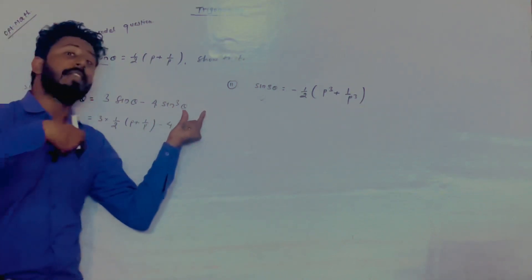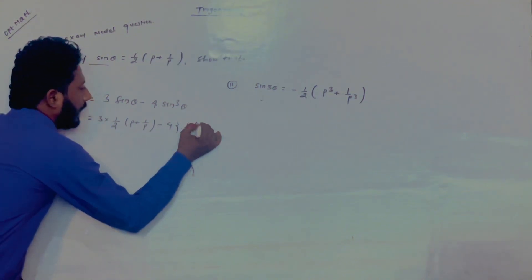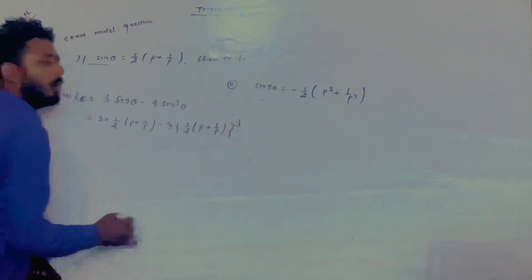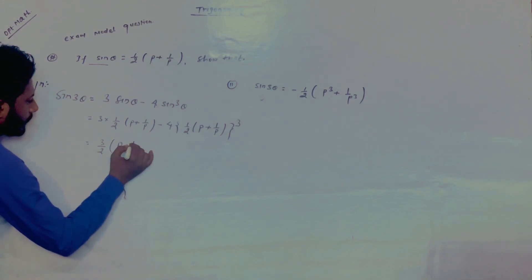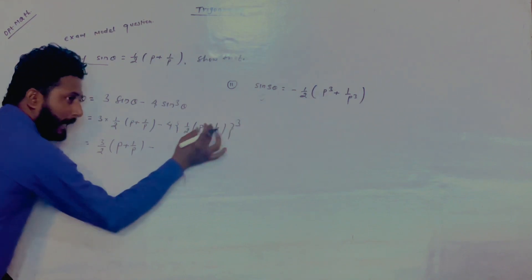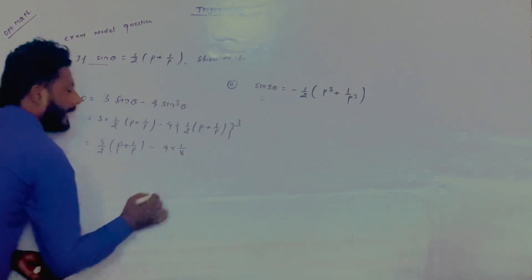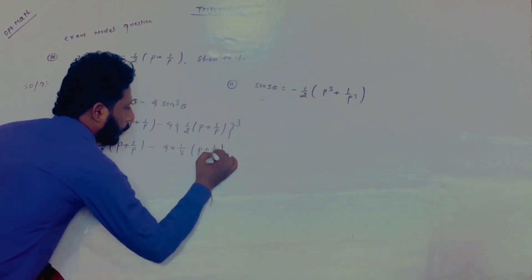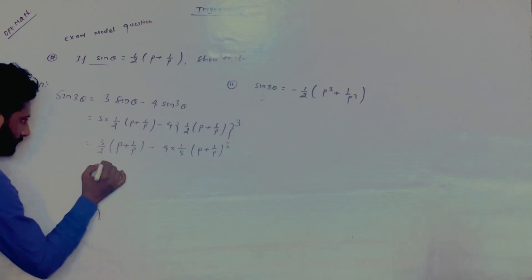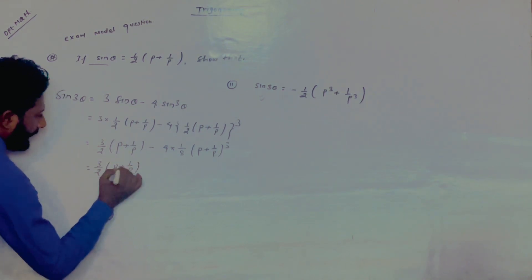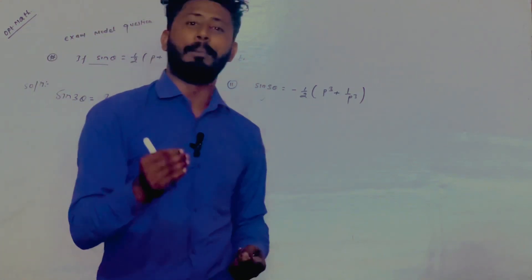Minus 4. There is sine cubed — sine cubed means sine times sine times sine, so the whole cube: 1 by 2, p plus 1 by p, whole cube. So that gives: 3 by 2 times p plus 1 by p, minus 4 into 1 by 2. Now apply the formula for (a plus b) whole cube.